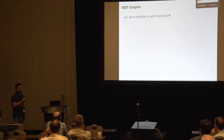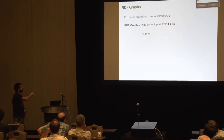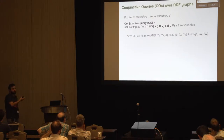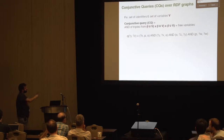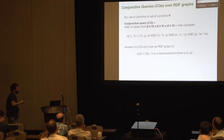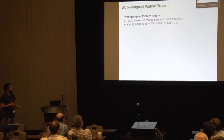We fix a set of identifiers I and a set of variables V — both are infinite. An RDF graph will be a finite set of triples of identifiers, called a graph because each triple can be seen as an edge from S to O with label P. A conjunctive query (CQ) is a conjunction of triples with variables or constants, where free variables are projected and the rest are existentially quantified. A full conjunctive query has all variables free with no projection.